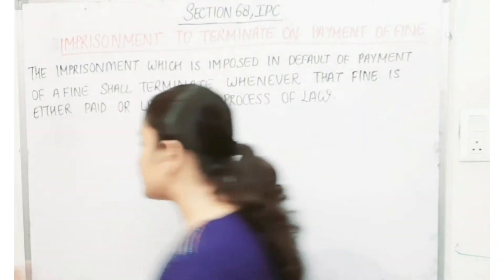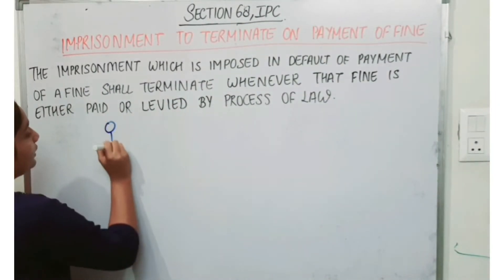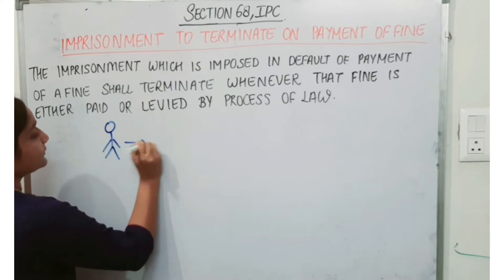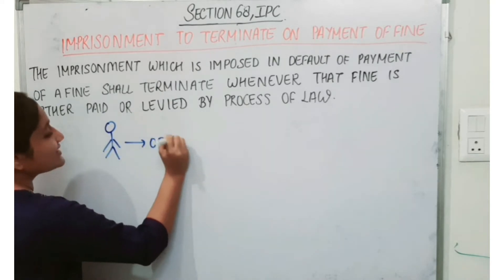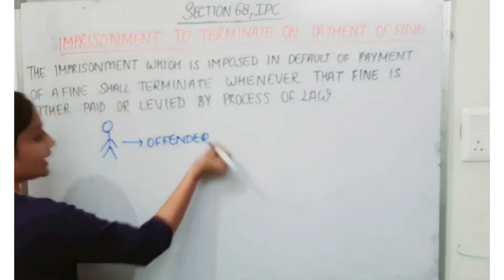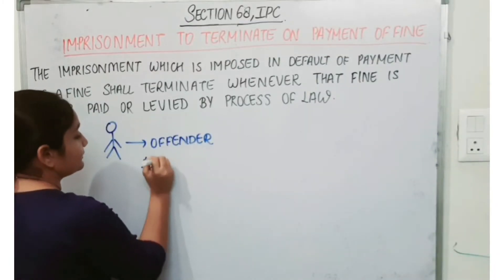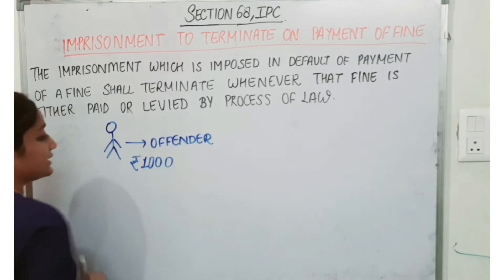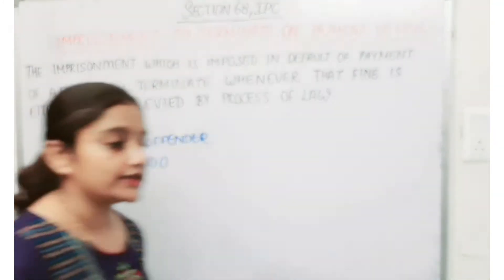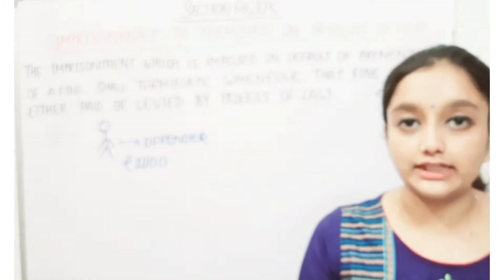Now let's look at examples. It is a very simple section, very easy to understand. It is an open-ended situation — a fine has been imposed by the court, but it has not been paid. So this results in imprisonment.